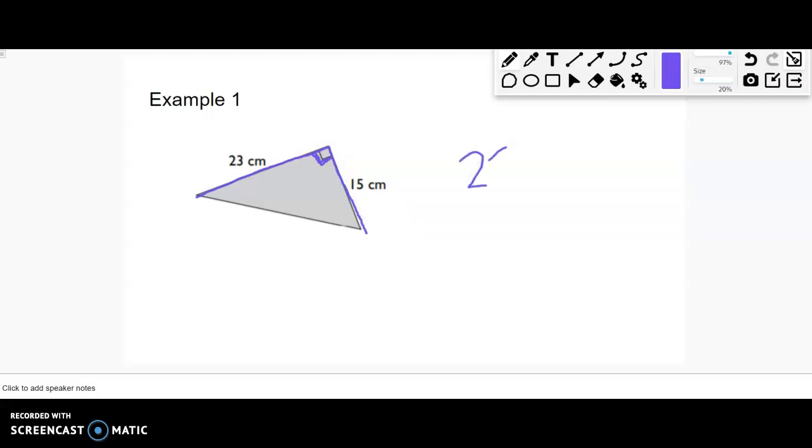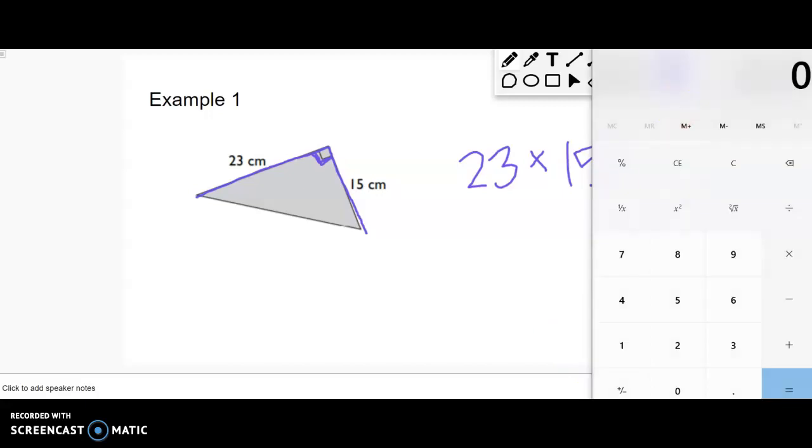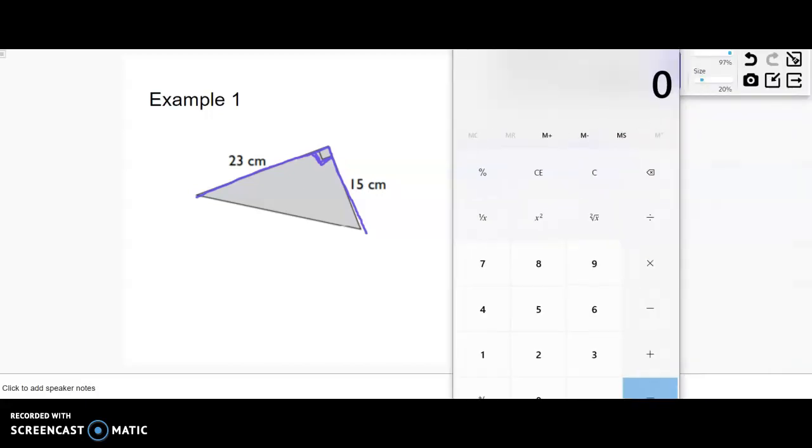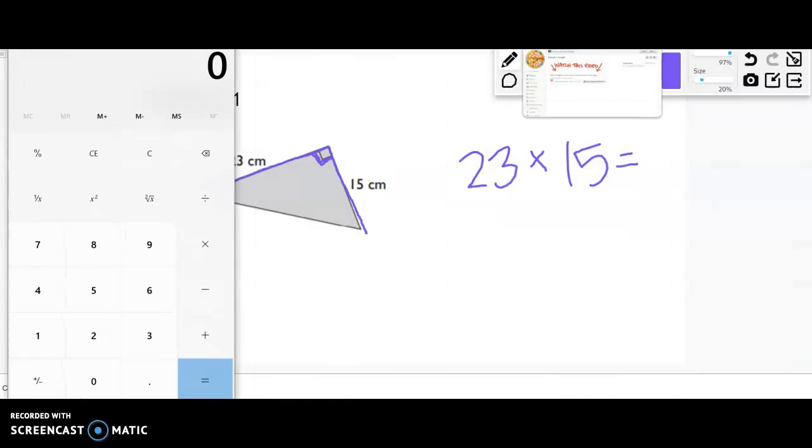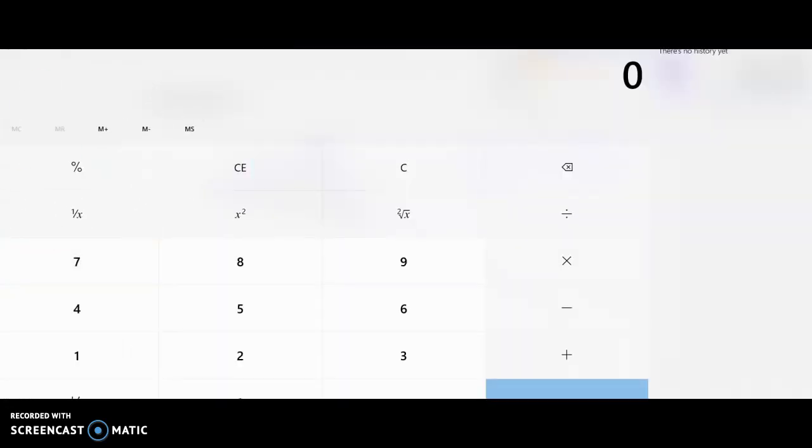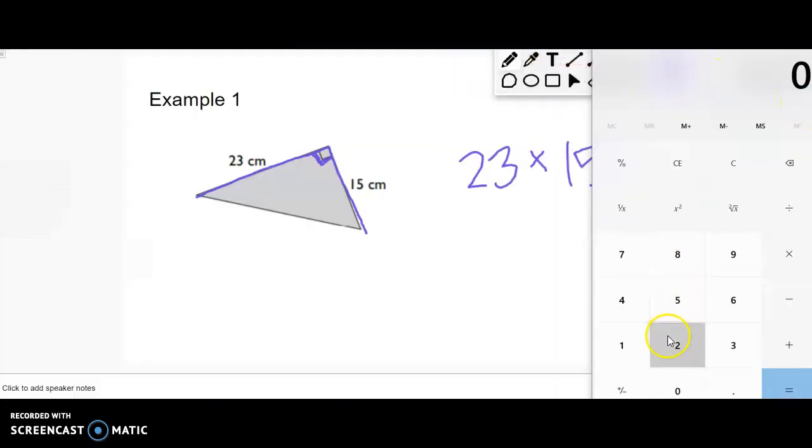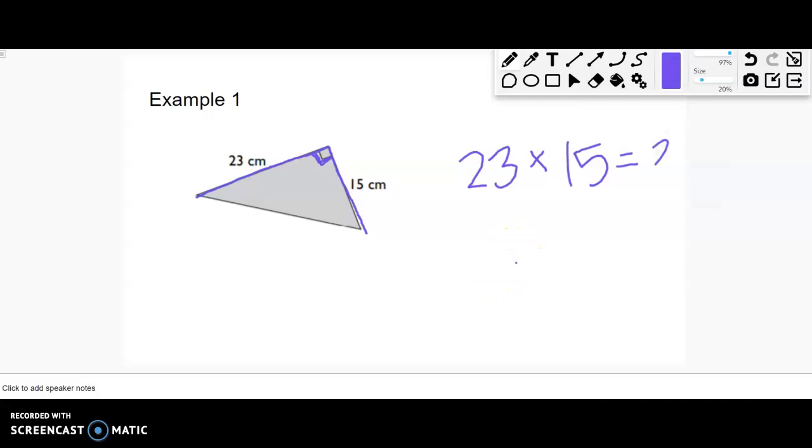But I need to do 23 times 15, and then once I get my answer, I need to divide by two. So you can use a calculator, no problem. We'll do 23 times 15, 345, divided by two, 172.5.